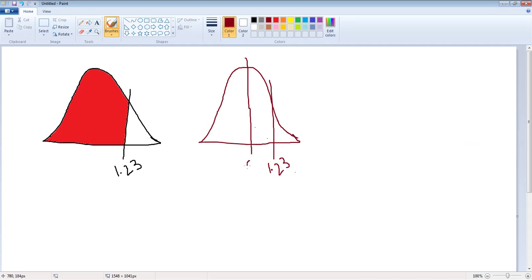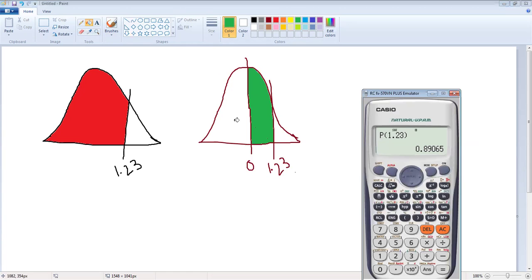And now you wanted to find the probability between 1.23 and the mean. So this is the probability that you want to find out. How can you do that? Obviously it's very easy to subtract from 0.5, but the calculator gives you that option too. You go to distribution and then you select Q. You write the same value, 1.23.